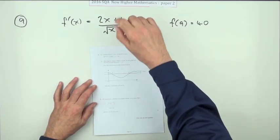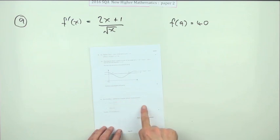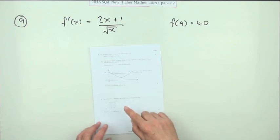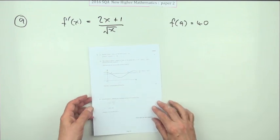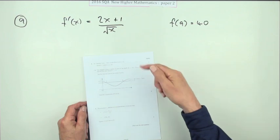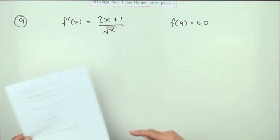Number nine from paper two of the 2016 New Higher. You're given the derivative of a function and you have to reconstruct the original function in terms of x with this additional bit of information, of course, to find the value of the constant that will pop out of the inevitable integration.